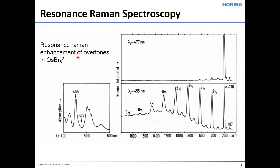Let's take a look at resonance Raman enhancement of overtones, in this case of an osmium hexabromide compound. On the left you see an electronic absorption spectrum from 400 to 600 nanometers, and there's an absorption band at 455 nanometers. At 477 nanometers there's very little, if any, absorption occurring at all. So when excited at 477 nanometers, we see basically just the fundamental vibrational modes — the symmetric stretch at nu one mode at 210 wavenumbers. We can also see the first overtone here.